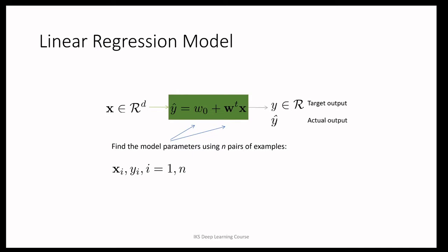w0 is a scalar quantity typically known as the bias. Together, the bias w0 and the weight vector w form the parameters of the model. The linear regression problem is: given a collection of n pairs of examples — every example consisting of a vector xi and a scalar yi — we need to use these pairs to find the parameters of the model.